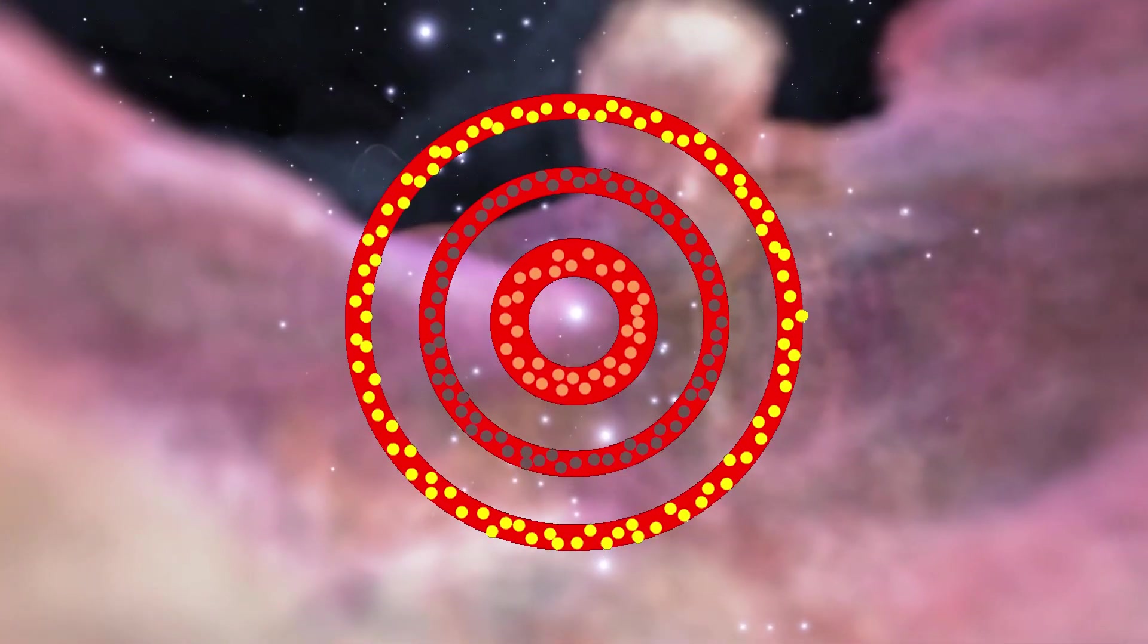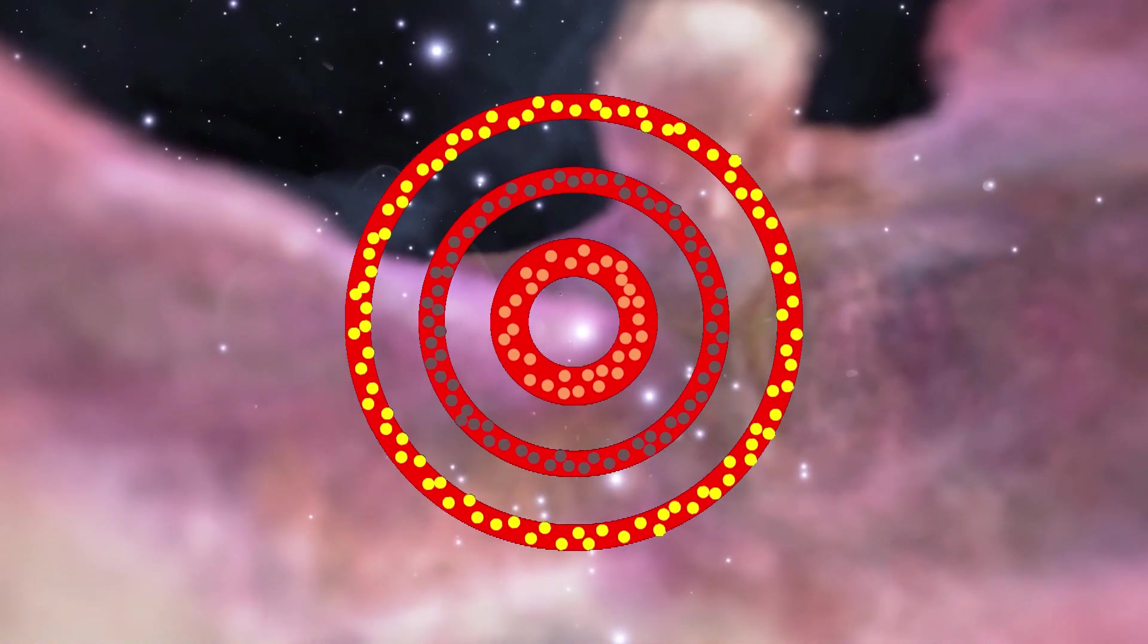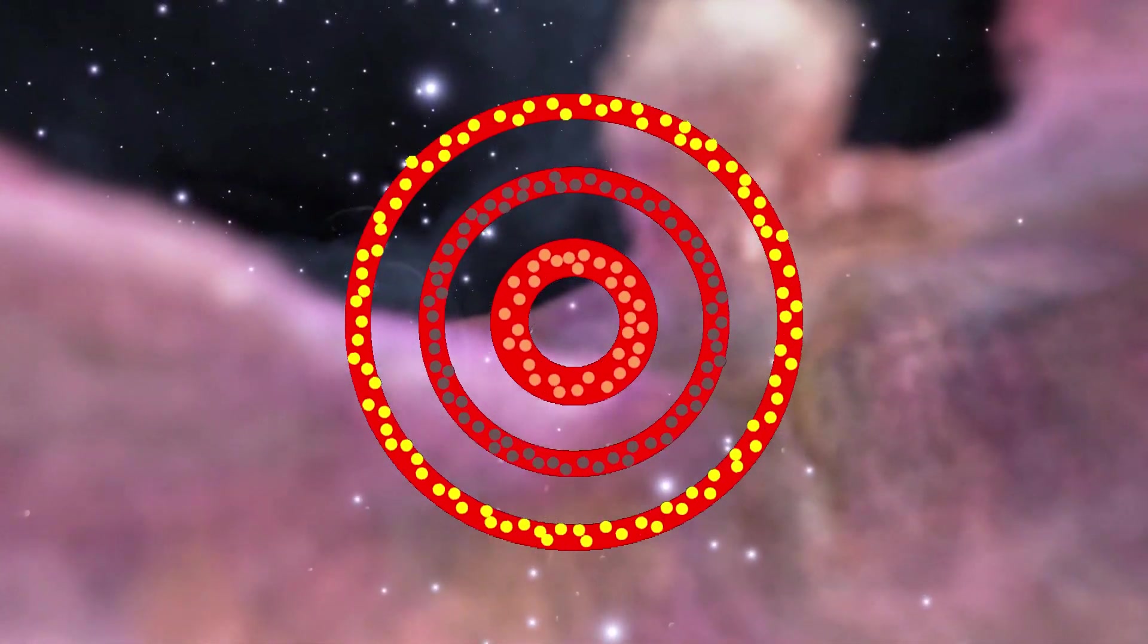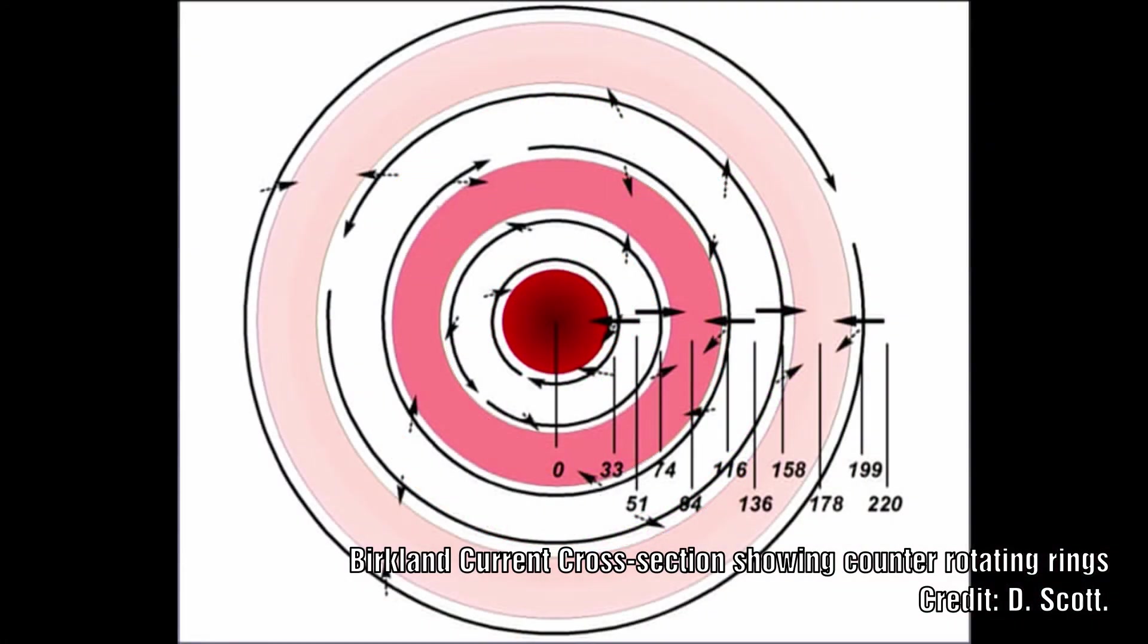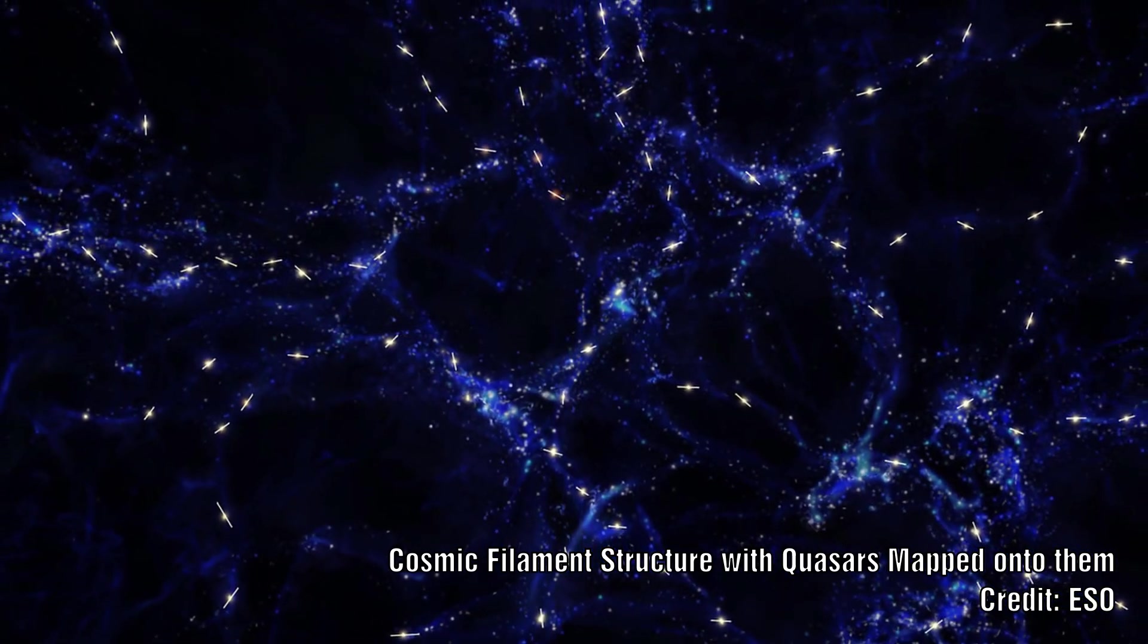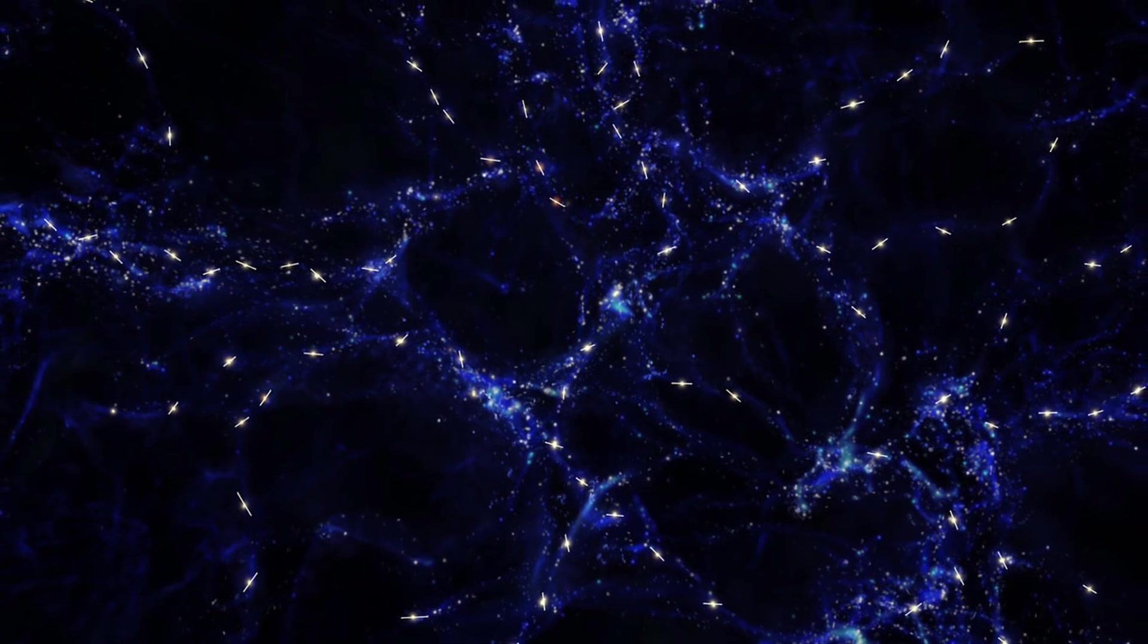So where have we seen counter-rotating shells before? In its simplest form, that would obviously be a Markland convection. But we also know that Don Scott's Birkeland current model also has counter-rotating shells. Could this be the first evidence that the hearts of active galaxies are connected to active Birkeland currents?